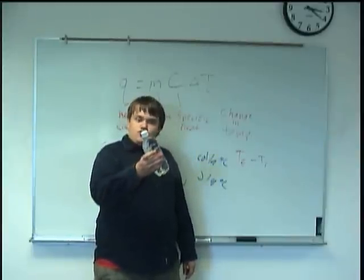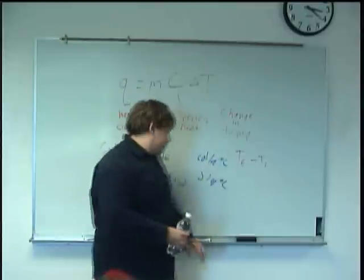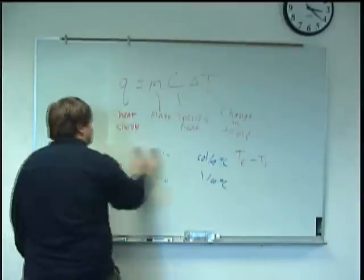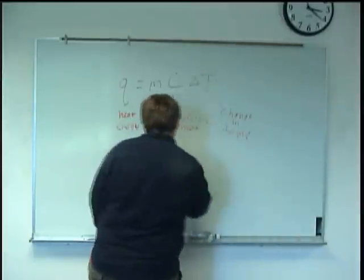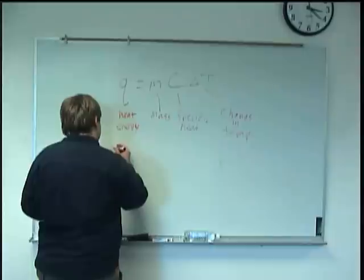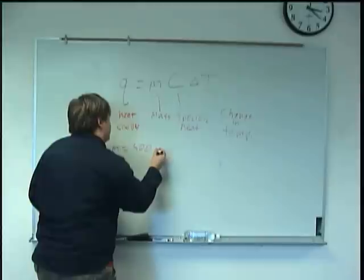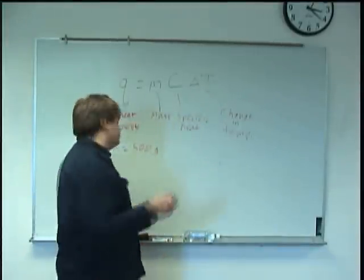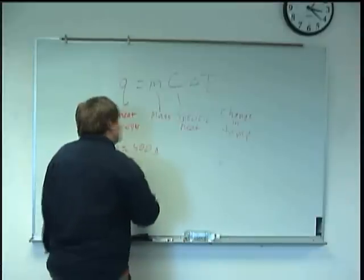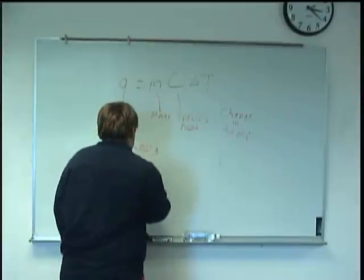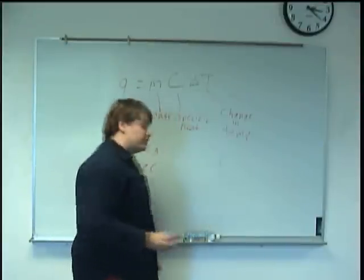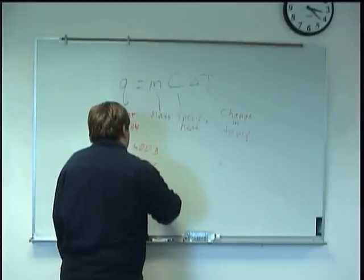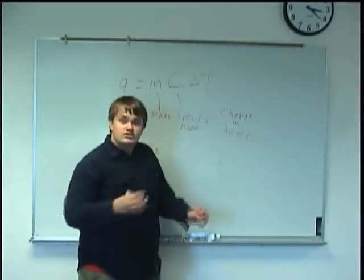Say we have about 500 grams of water here. So we have a mass of 500 grams. And then say it's at room temperature. So our initial temperature is about 21 degrees Celsius. And then our final temperature is of course the boiling point of water, if you want to get it to the point where it's just starting to boil.